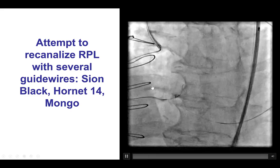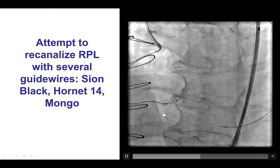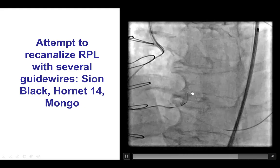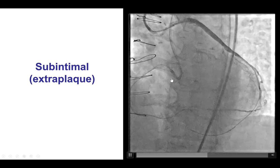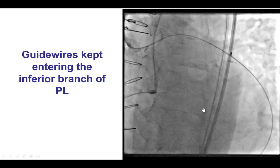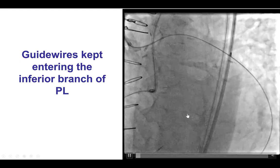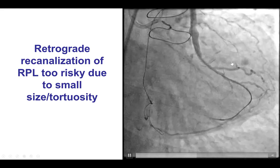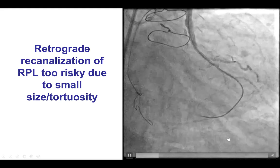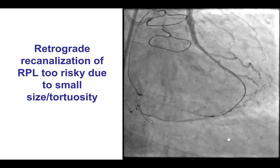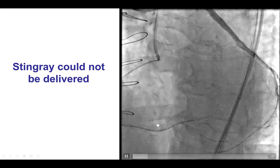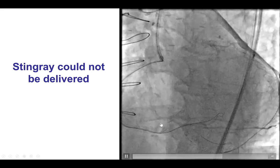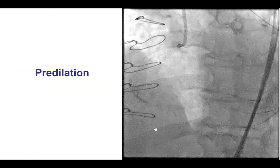The next challenge was to advance a guidewire to the right posterolateral. We used a Sasuke dual-lumen microcatheter, but the wire seemed to go into the subintimal space. We then used various guidewires to attempt re-canalization of the right posterolateral, and a contralateral injection confirmed the guidewire was in the subintimal plane. We also considered going retrograde to the right posterolateral, but because of severe tortuosity and small size of the collateral, we did not believe the risks were worth it. Unfortunately, we could not deliver a stingray balloon despite multiple attempts and significant pre-dilatation.